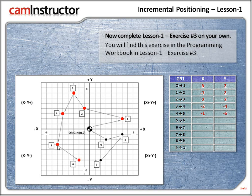5 down to 6. Let's figure out those x values first. We're moving to the right, in the x positive direction. How many squares? 1, 2, 3, 4. So x is 4. What about the y? We're moving in the negative y direction. How many? 1, 2, 3. So from 5 to 6, x is plus 4 and y is minus 3.